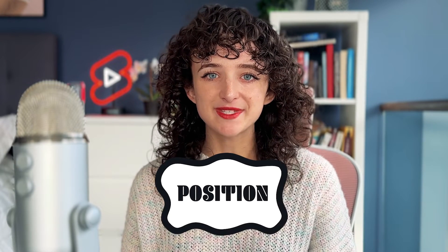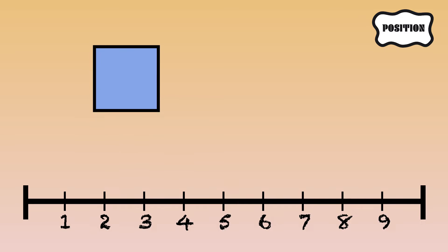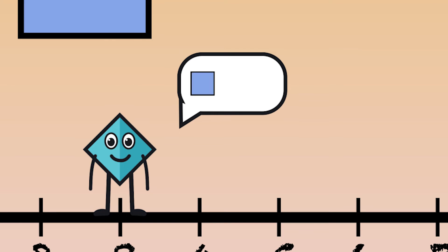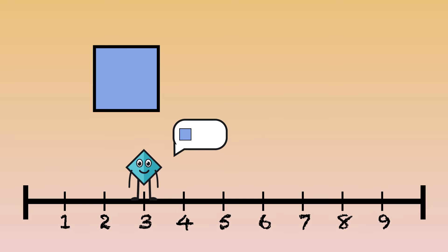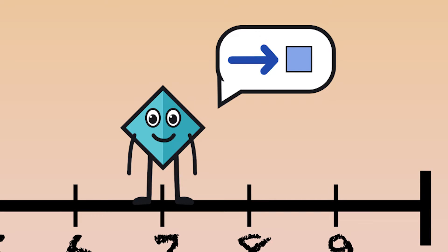Let's use position keyframes as an example. Say we have a square and we want it to move from one side of the screen to the other. To make that happen, we set a keyframe here to say at this time I want the square to be here. Then we set another keyframe after it to say at this time I want the square to be here.